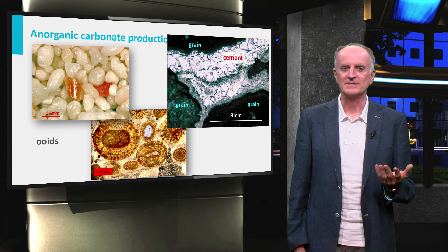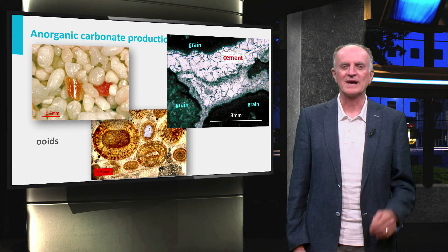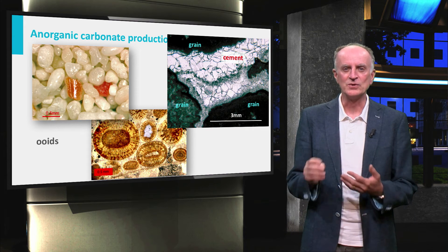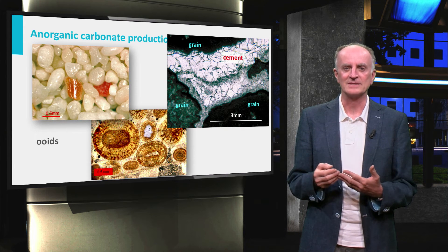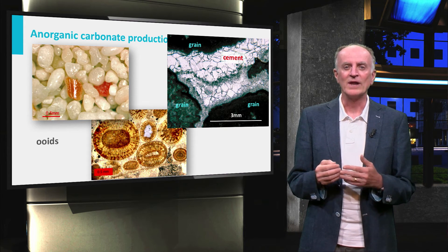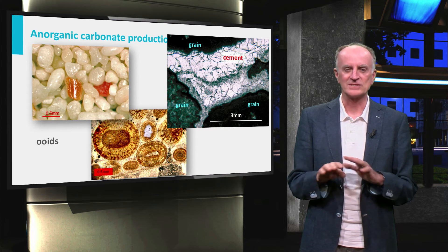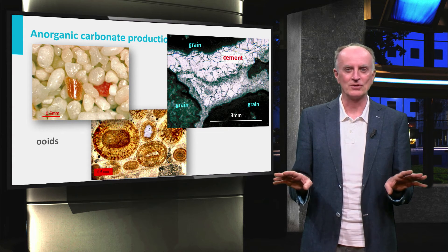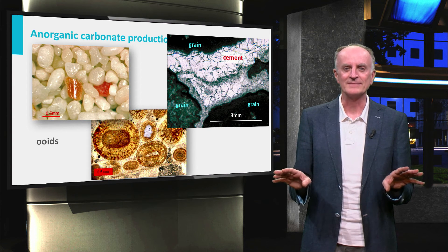Abiotic precipitation is also the process driving the formation of cements during diagenesis of carbonate sediments. One of the important effects of cementation is to eliminate porosity — something all geologists do not want to happen.